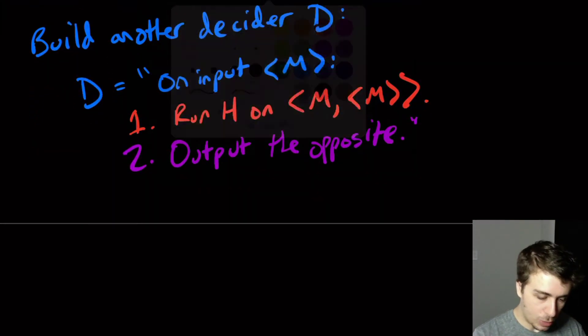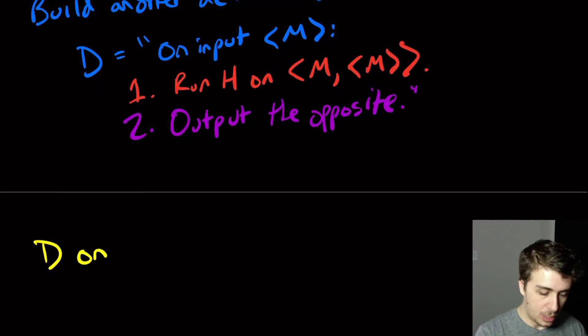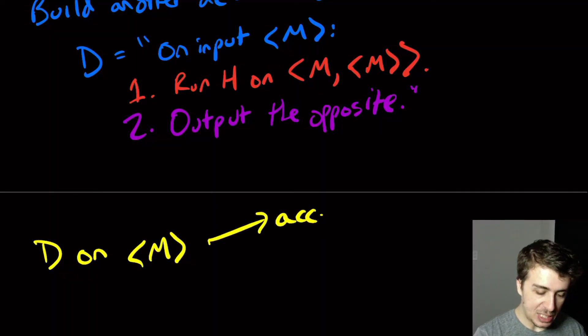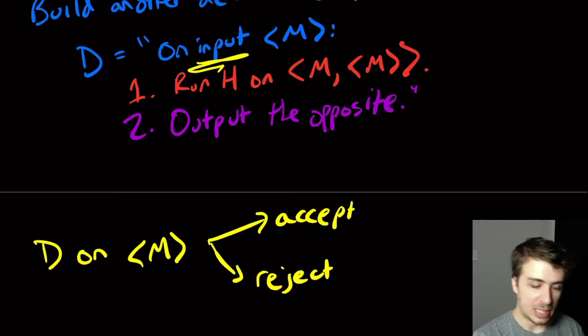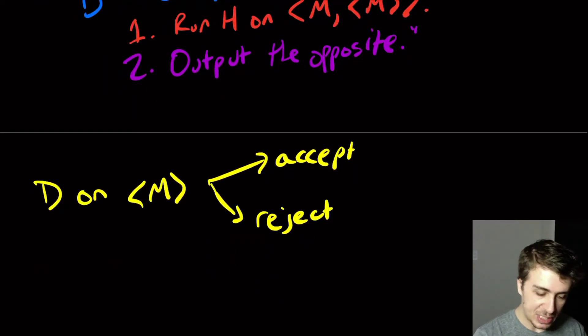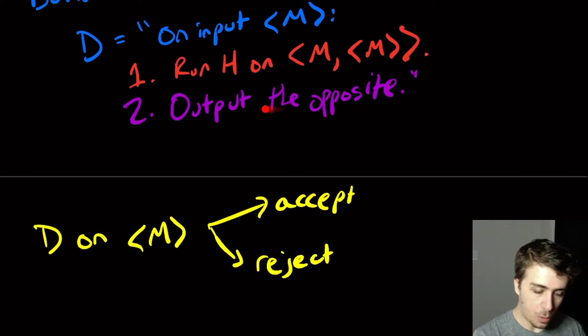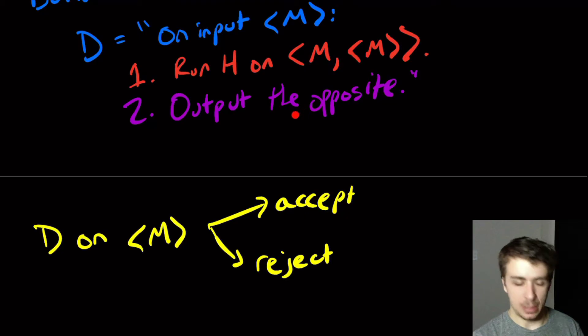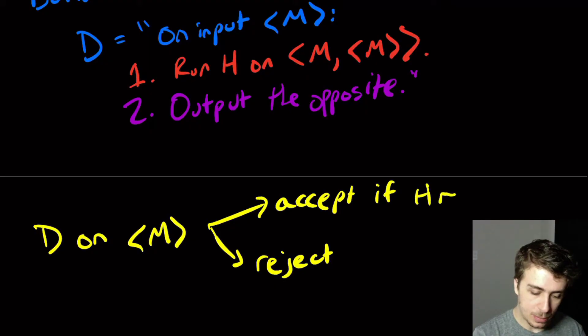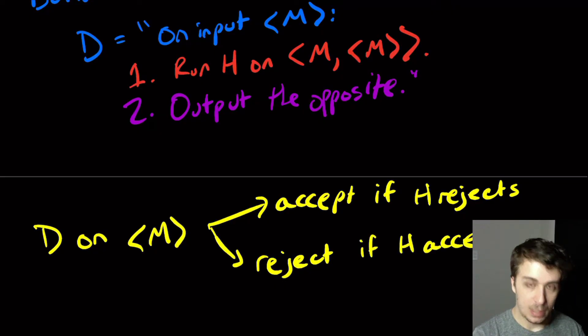So again, for posterity, we should figure out what the D machine does. So D on the Turing machine M, remember, it has exactly one input, will always say accept or reject. It must do one of the two, because we argued that it was a decider. It runs in a finite amount of time. So it says accept if what? Well, what does it mean for the D machine to say accept? Well, we outputted the opposite. So that means that the H machine must have rejected at that point, because the D machine does the exact opposite. So this says accept if H rejects. And reject if H accepts.